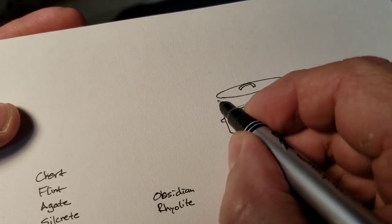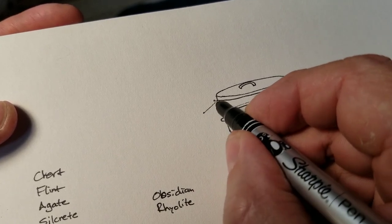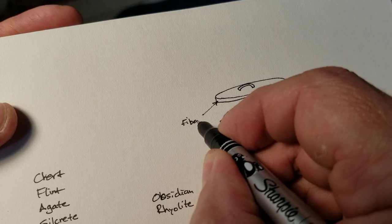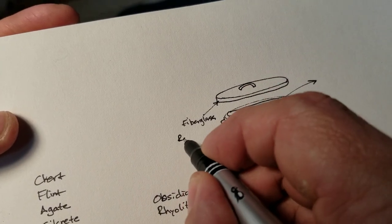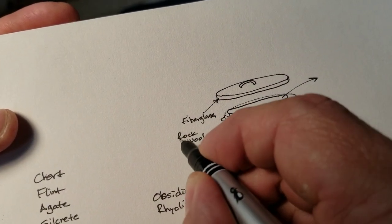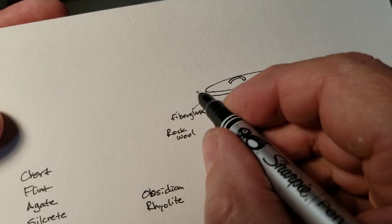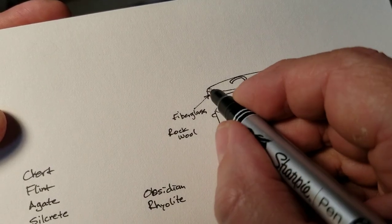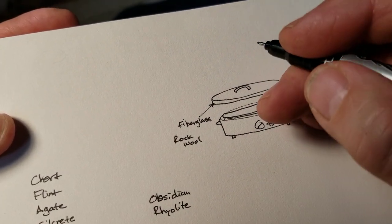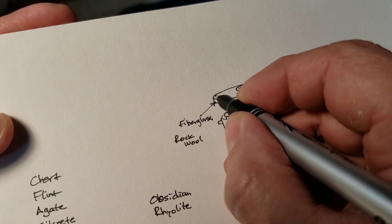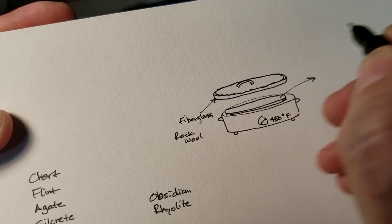Also, you want to insulate the bottom of this lid with fiberglass insulation or insulation that's not flammable, rock wool and so forth. I showed how to do this in a video, but basically you just take heavy duty aluminum foil and crimp up a sheet of it, put the insulation down, then put the lid down on the sheet. And then you crimp the edges of the aluminum foil around the lip of the lid to hold the insulation in place.